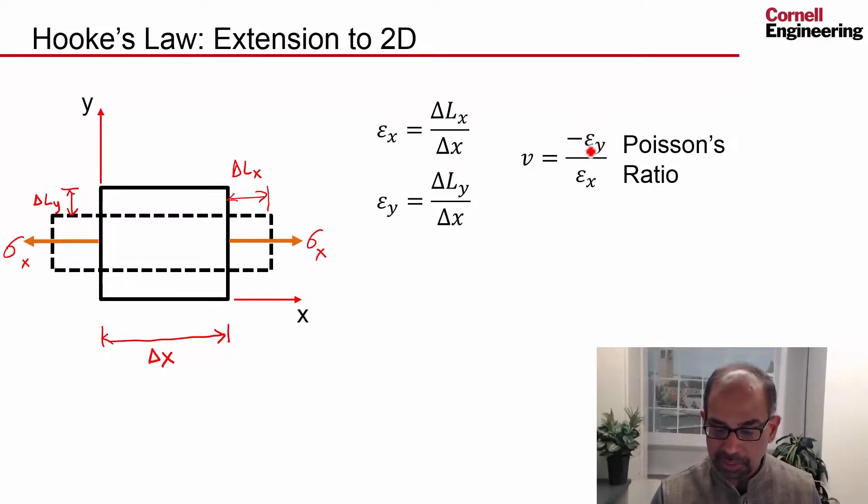And I have a negative here because if this is a tensile strain, this has to be a compressive. So this will be negative. And if I put a negative sign here, then Poisson's ratio is positive. So that's a material property.